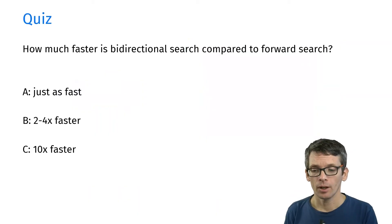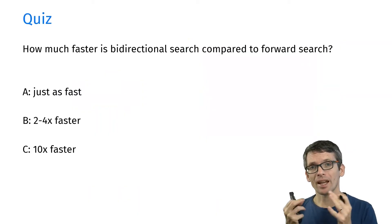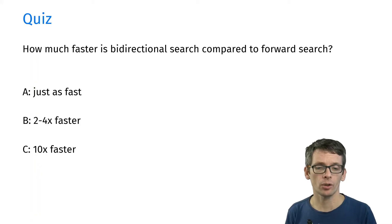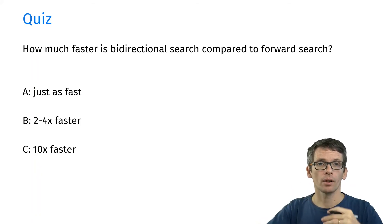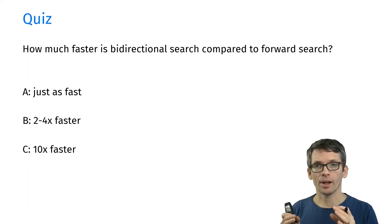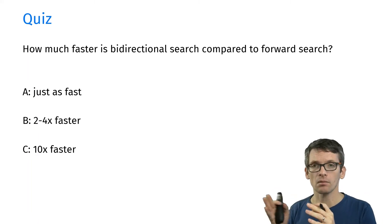Here's our first quiz. How much faster do we expect bidirectional search to be compared to the simple forward search? Do we expect them to be just as fast, 2 to 4 times faster, or 10 times faster?